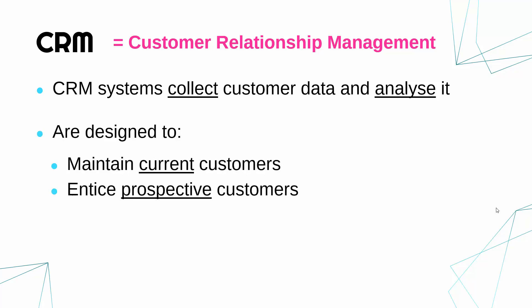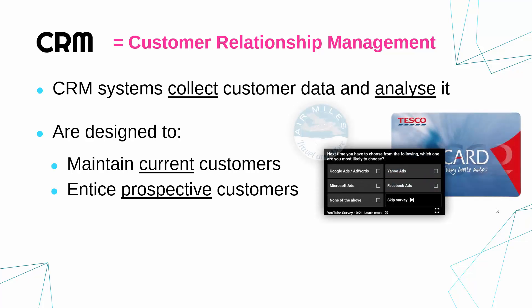The two key aims of a CRM are to maintain your current customers — make sure customers who are shopping with you continue — but also to try and increase your business by enticing prospective customers. Prospective customers are people who might want to shop with you, and you want to make sure they are more loyal and will use you more often. The sorts of CRM schemes you might come across are things like the Tesco Clubcard and other loyalty cards, things like air miles — when you fly lots, you get discounted airplane tickets. You might have seen on YouTube, instead of some adverts, they do little surveys. All of these are part of those companies' CRM.